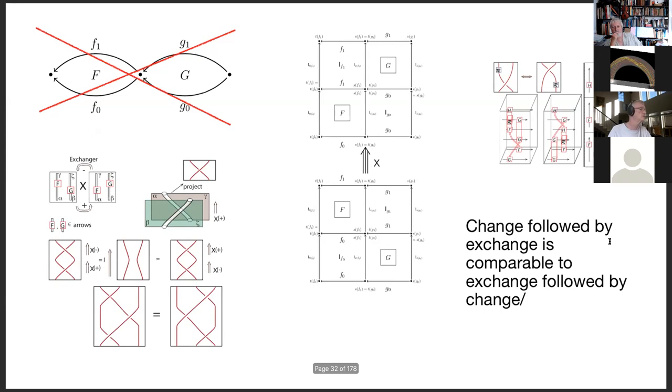You could also do it the other way by augmenting in the other fashion, and then declare that there is a triple arrow relating those two things. The triple arrow should satisfy certain axioms. Here we start with g below f; if we exchange their positions and then change f to h, that would be the same as changing f to h and then exchanging g and h. So change followed by exchange is comparable to exchange followed by change.